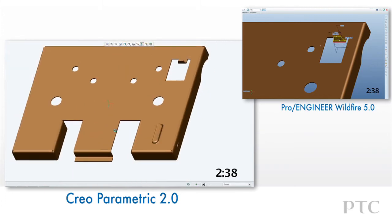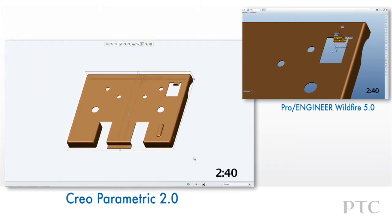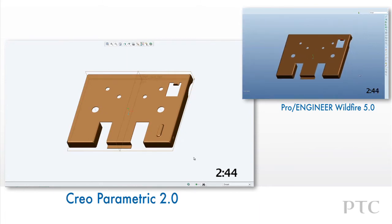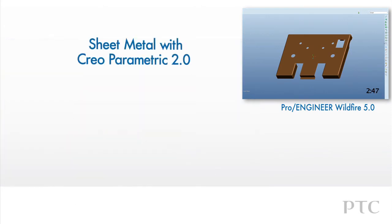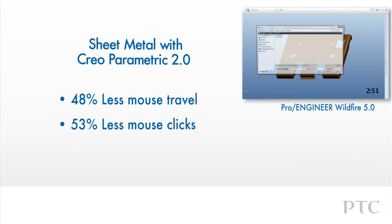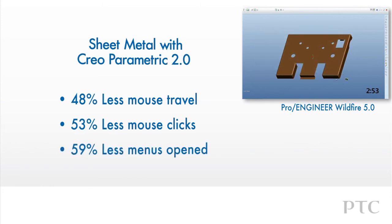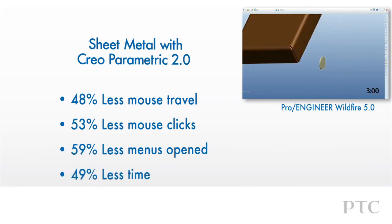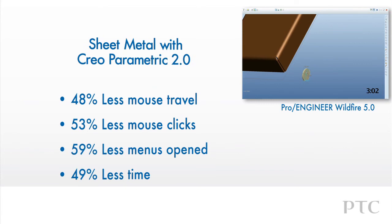We've shown some of the key highlights in creating sheet metal parts with Creo Parametric, including new capabilities and streamlined workflows. The result is improved design productivity — as even in this short comparison, I saved 49% of the time taken to achieve the same result with Creo Parametric compared to Pro Engineer Wildfire.